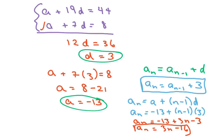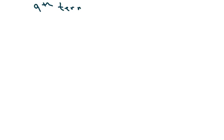So everything I have boxed is what we were supposed to do. The next ones are going to go a little faster. The next one we have is the 9th term is negative 5.